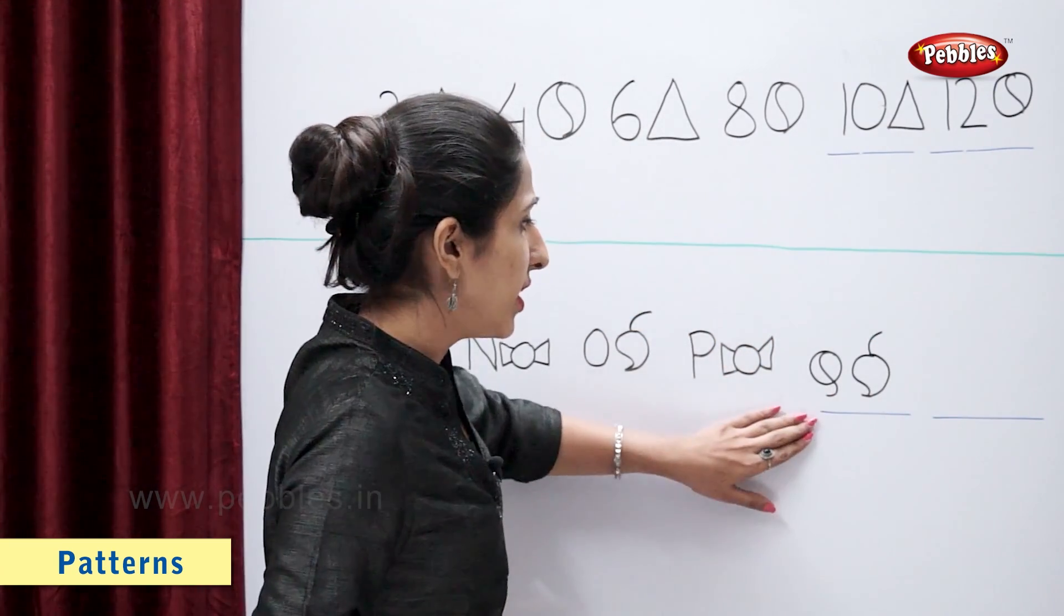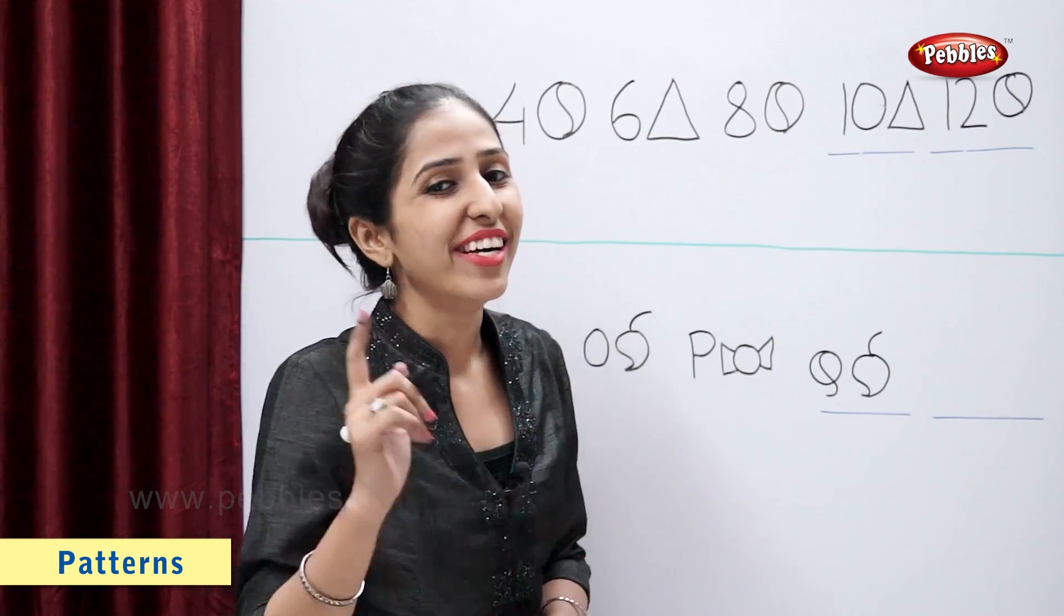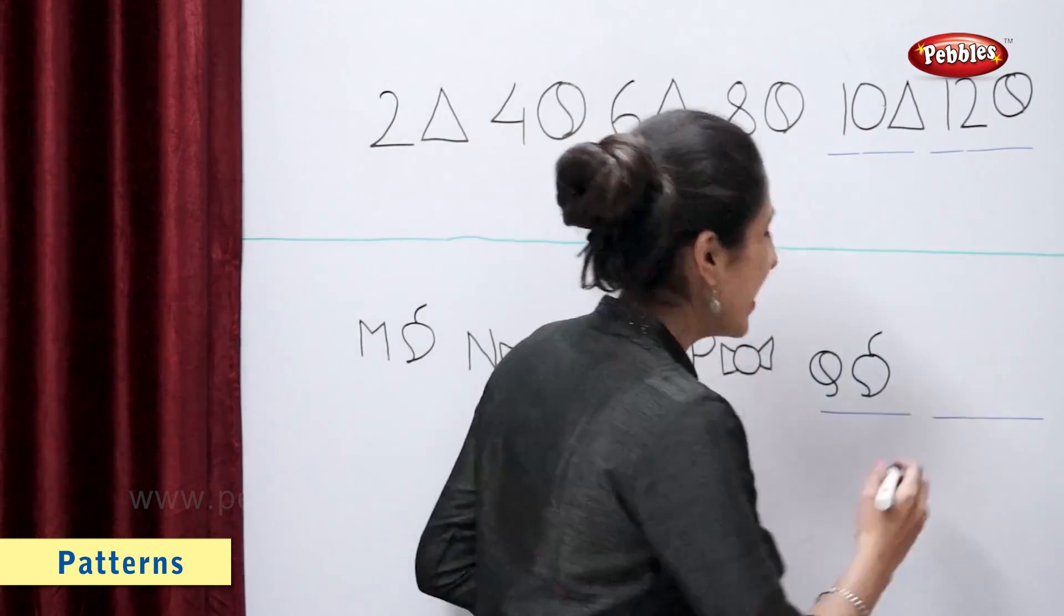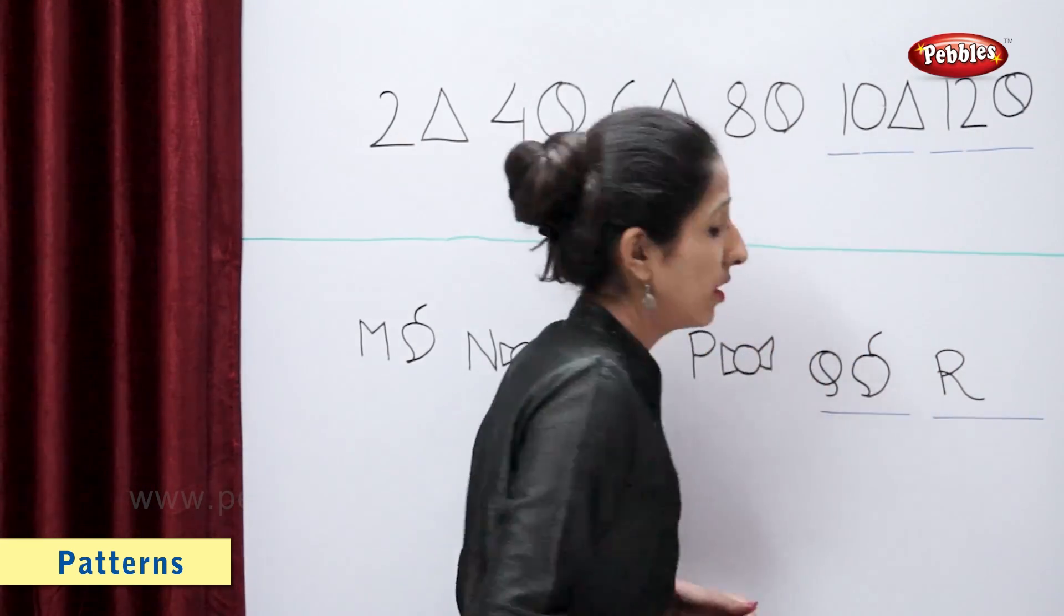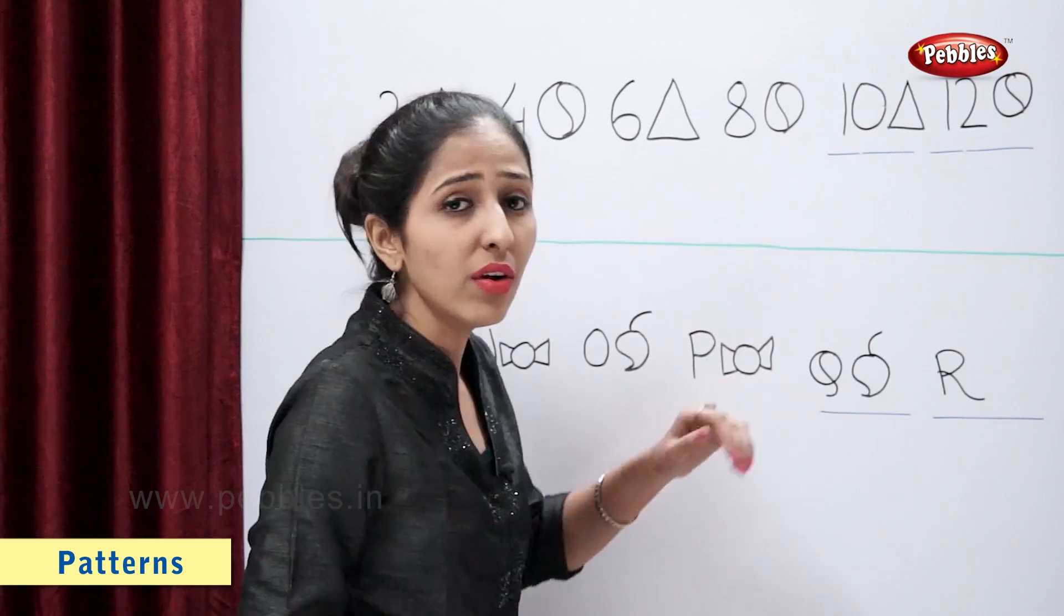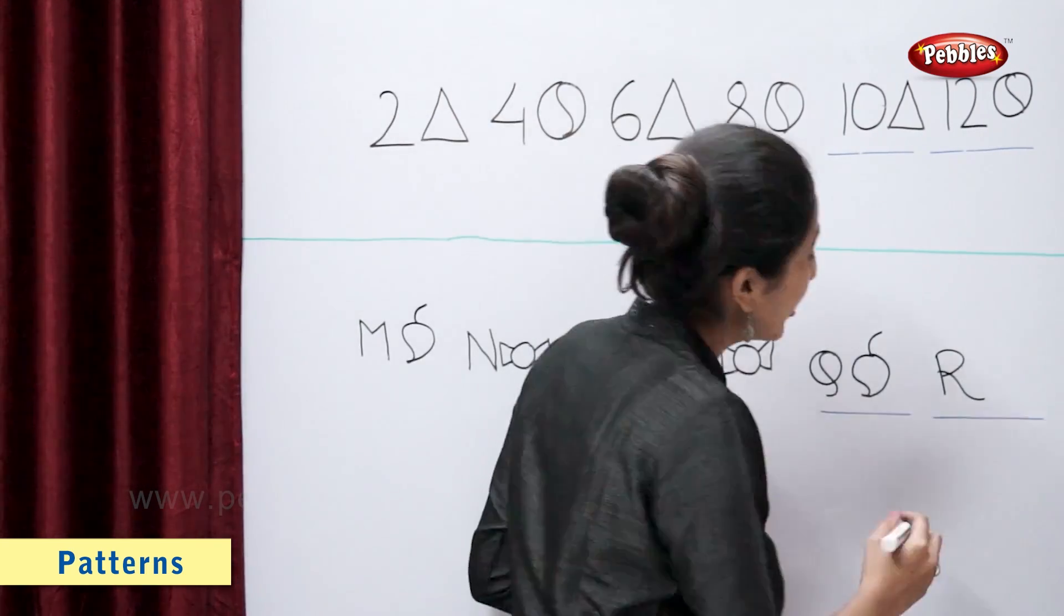So which is the next figure? Letter R. The shape after mango? Correct, toffee.